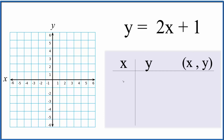I'm going to start with 0. I could choose any number, but I know if I use 0 it's probably going to be closer in this area and it won't go off my graph. So if x is 0, I'll have y equals 2 times 0 plus 1. 2 times 0 is 0, plus 1, that's 1. So x is 0, y is 1 — the point (0, 1) — and then I can just plot that.